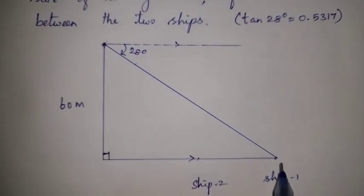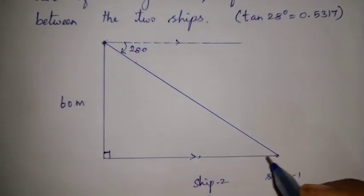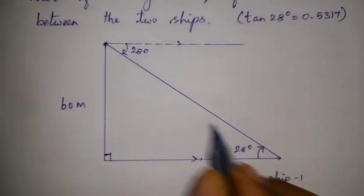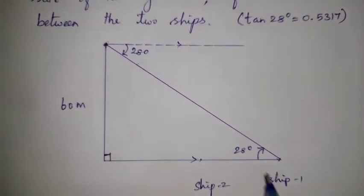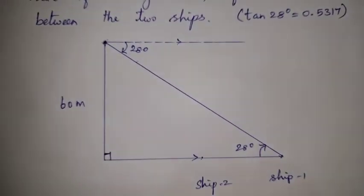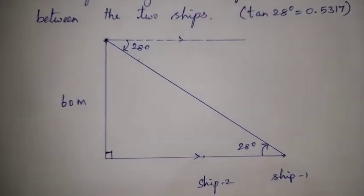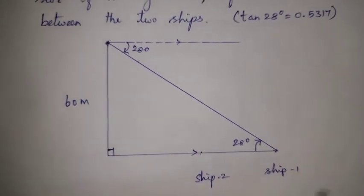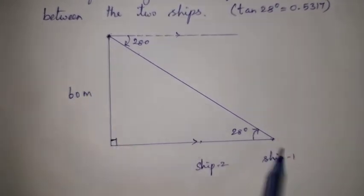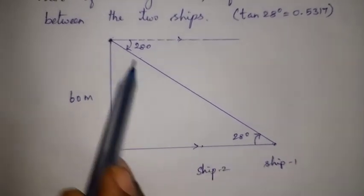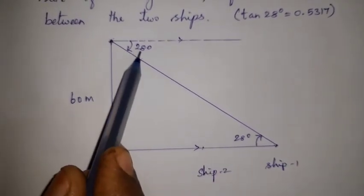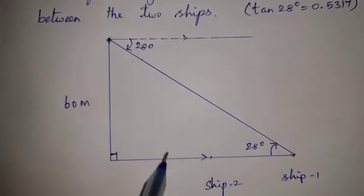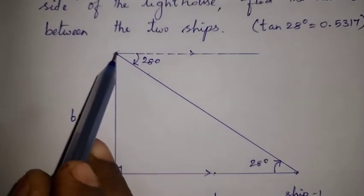This is the horizontal line. Here, an alternate angle is formed. The angle at ship 1 is 28 degrees because alternate angles are equal. So the angle of depression from the top of the lighthouse to ship 1 is 28 degrees, and by alternate angles the angle at ship 1 is also 28 degrees.